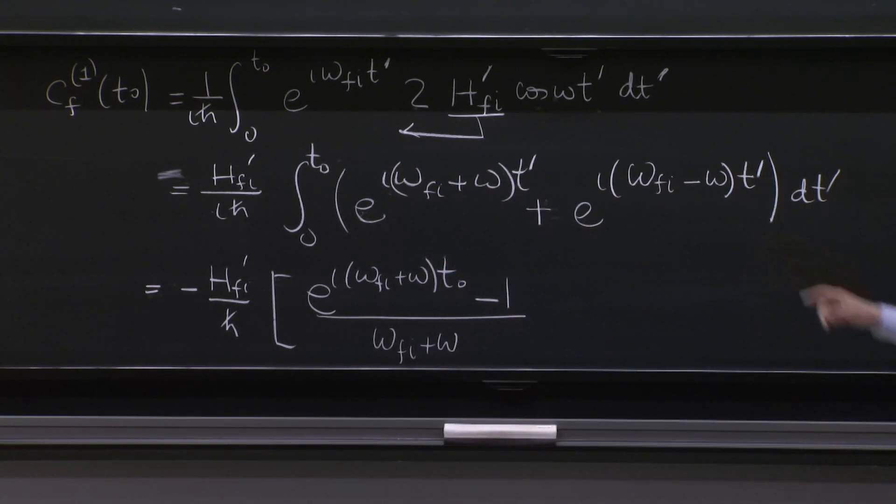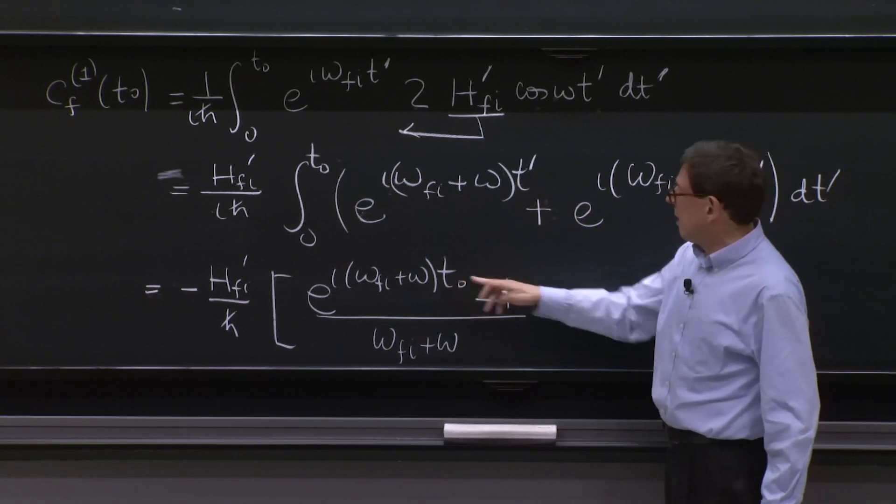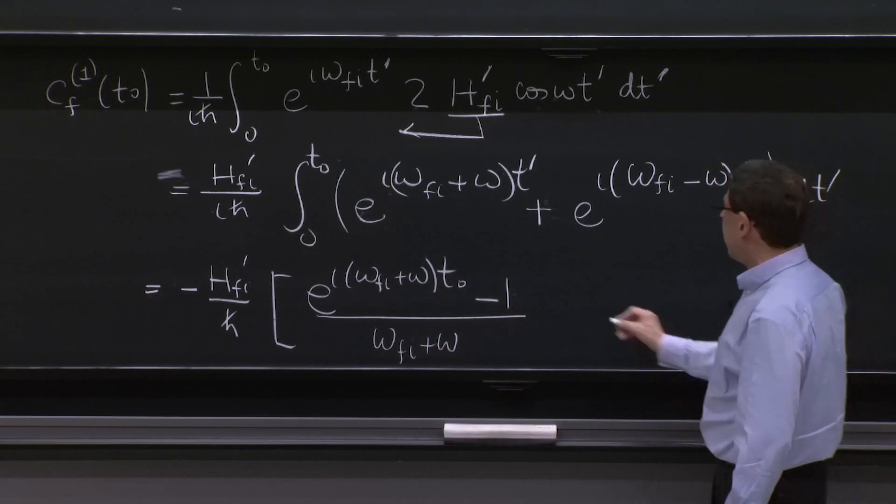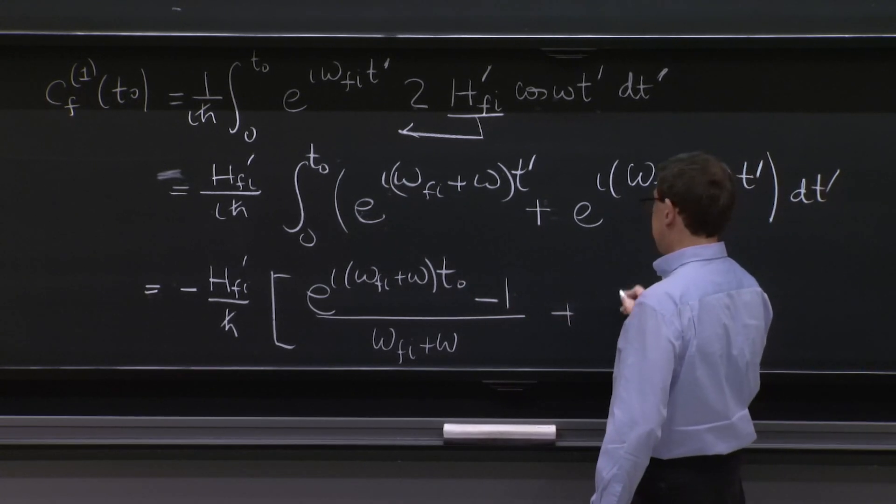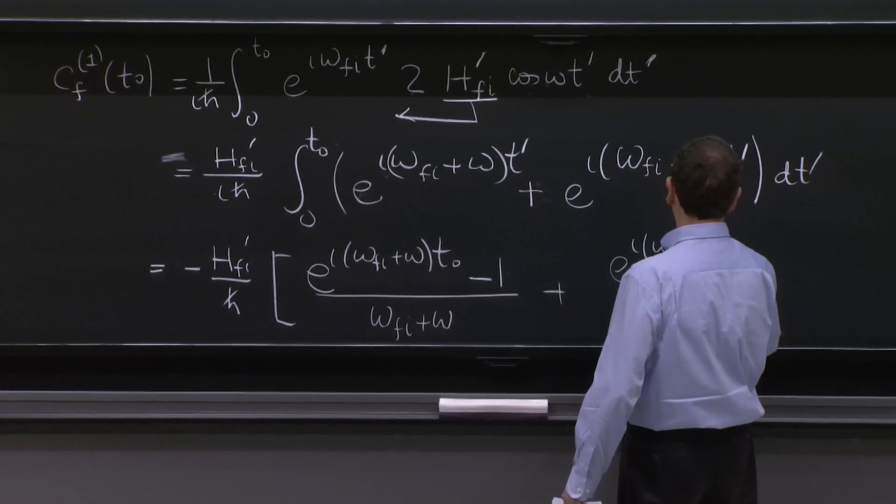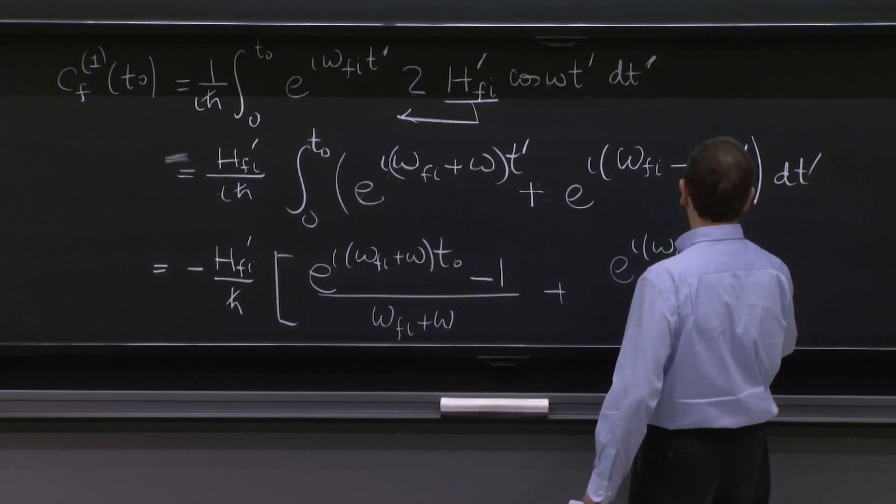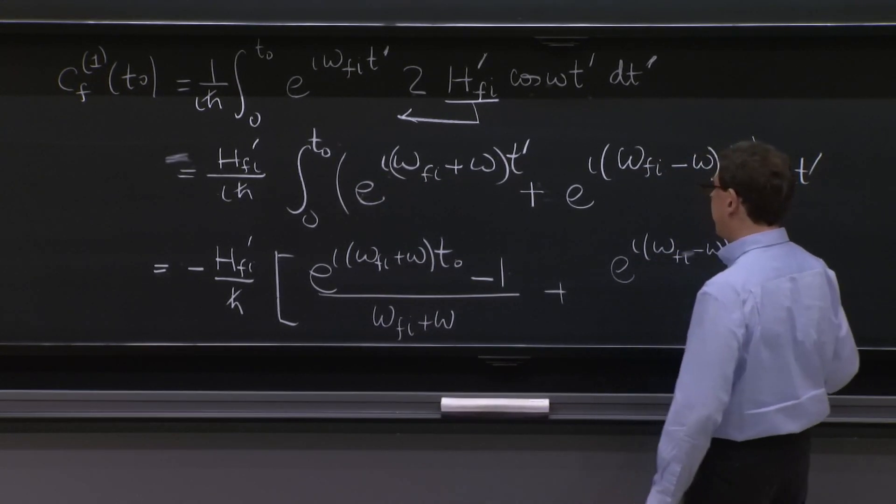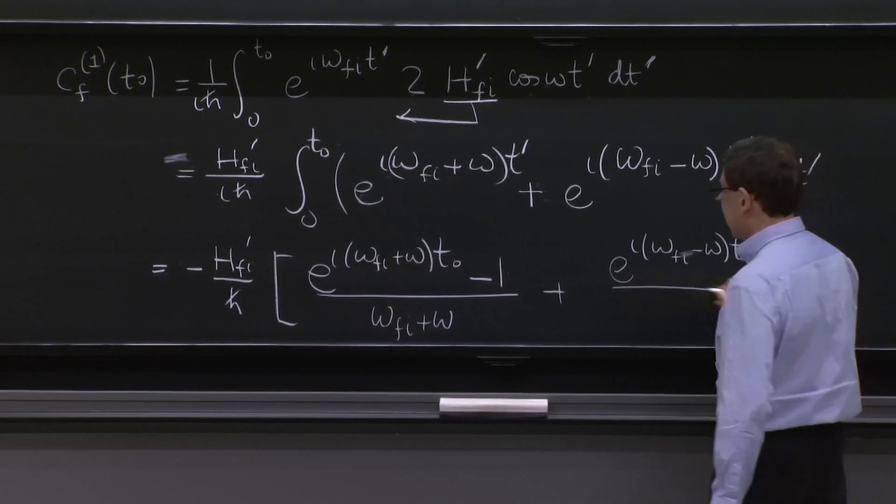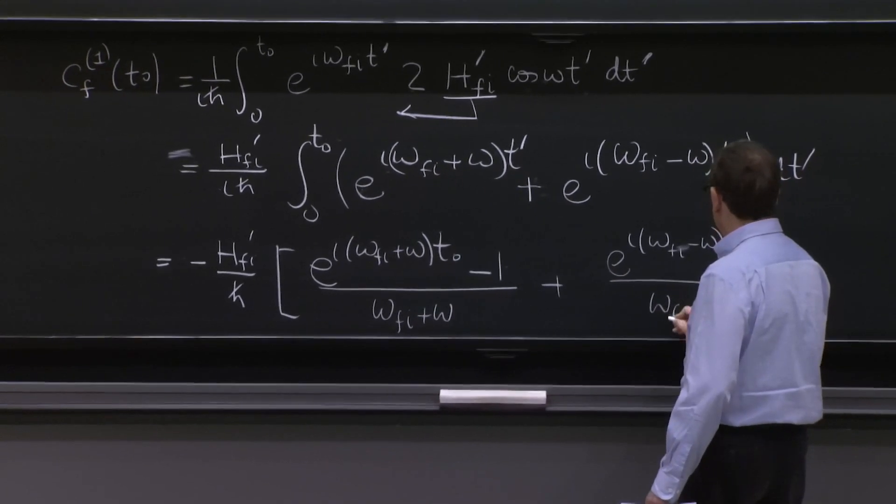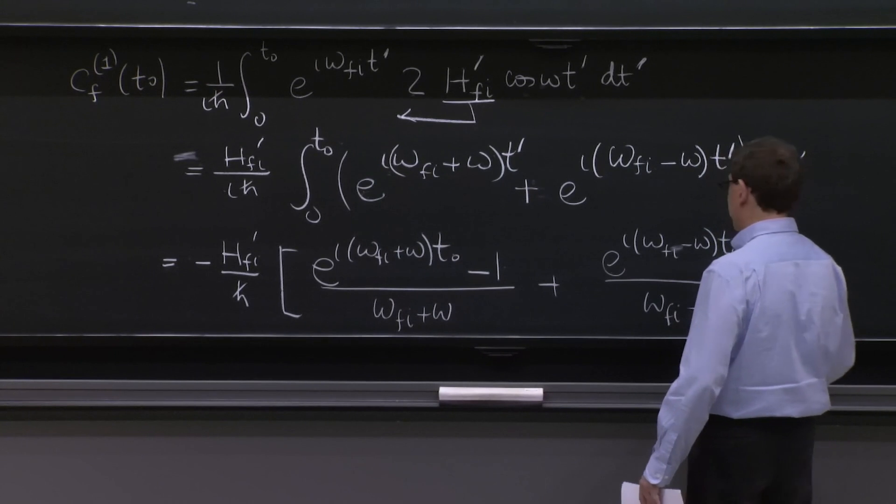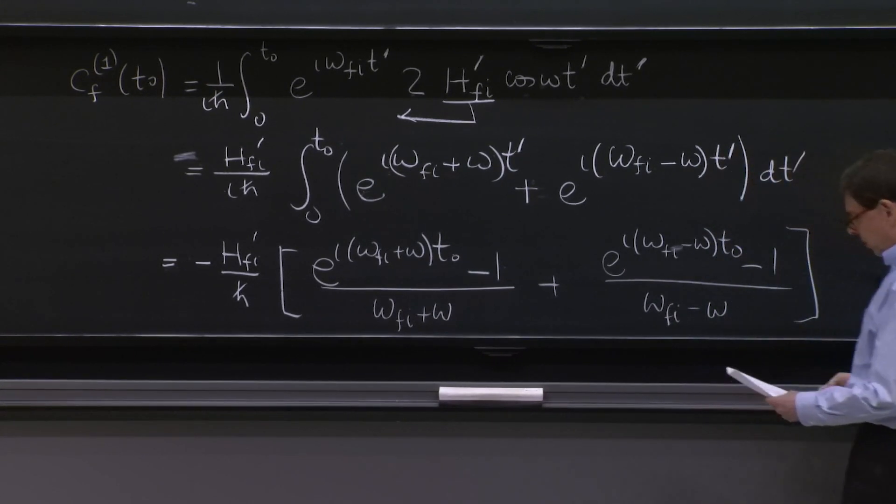You can imagine that e to the i omega t integrates to e to the i omega t over omega. So that's why that works. And the two limits at t0 at 0 plus e to the i omega fi minus omega t0 minus 1 again over omega fi minus omega. Great.